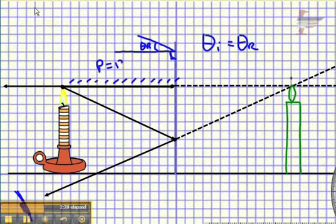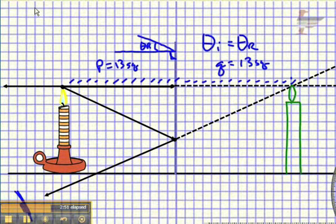So we see that for a plain mirror, an object appears to be just as far behind the mirror, virtually, as the object is in front of the mirror. And that probably goes along with your common experience. And that's how you construct a ray diagram for an object and a plain mirror.